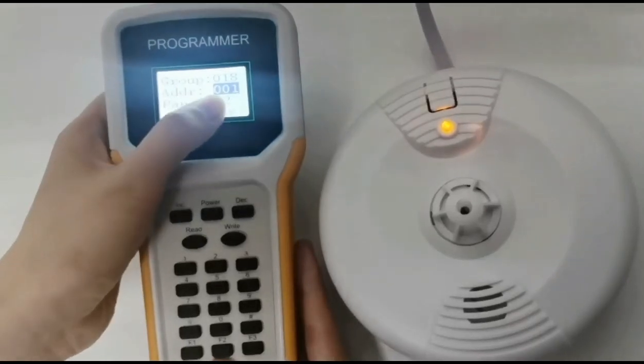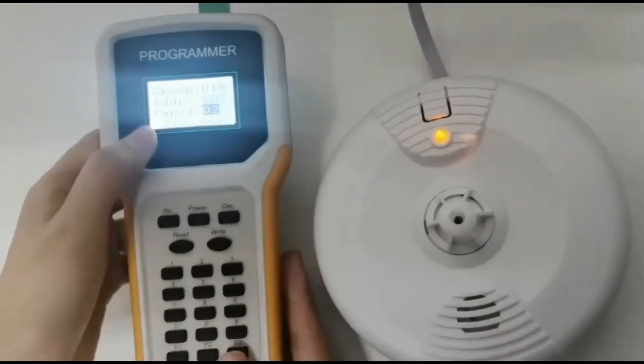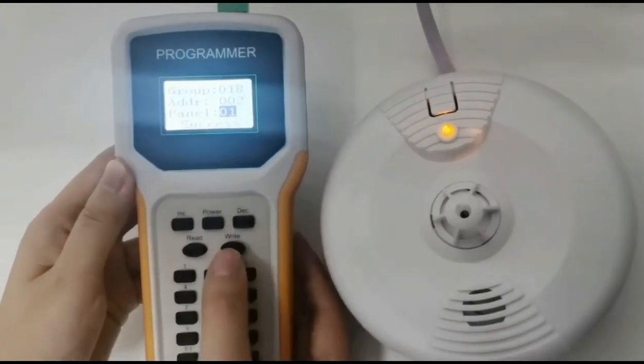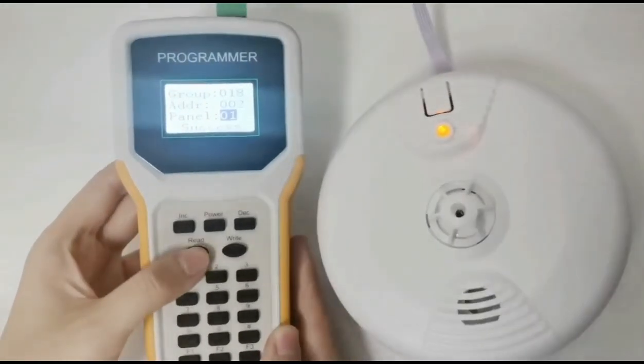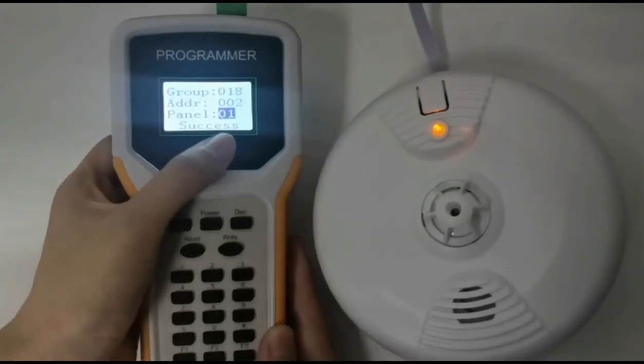We code group as 18, address as 002, and panel as 01. Then we press right. Then press read to check the address again.